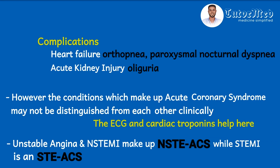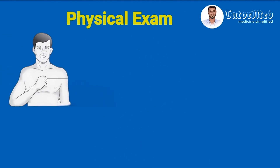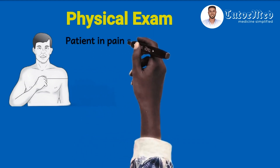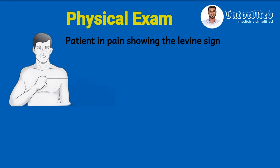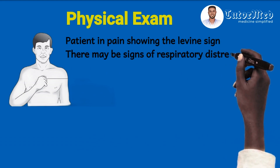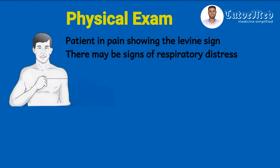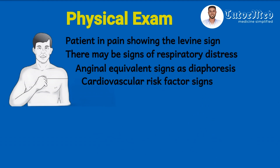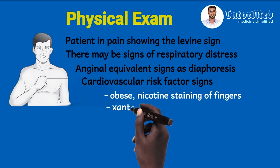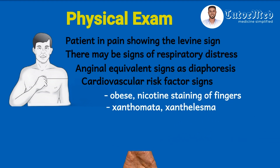For physical examination findings in chest pain of cardiac origin: the patient may be seen in pain showing the Levine sign, where the patient clenches his fist and places it on the central chest or precordium. There may be signs of respiratory distress such as increased respiratory rate, flaring of the alae nasi, and intercostal recessions. There may be angina equivalent signs like excessive sweating or diaphoresis. Cardiovascular risk signs include obesity, nicotine staining of the fingers, cholesterol deposits in the skin called xanthomata, and in the eyelids called xanthelasma, as shown in the diagrams.